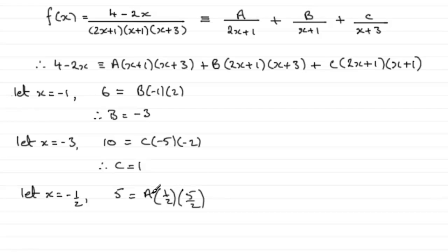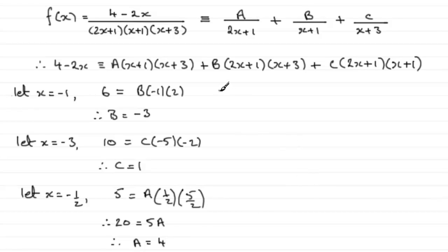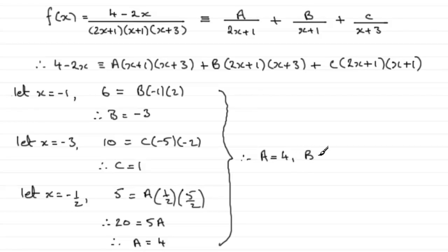We have 5 = A times (5/4), or 5 = 5A/4. Multiplying both sides by 4 gives 20 = 5A, then dividing by 5 gives A = 4. To recap: A = 4, B = -3, and C = 1.